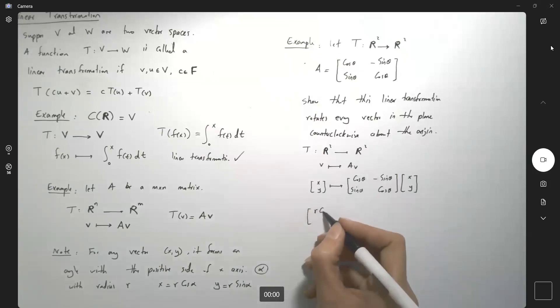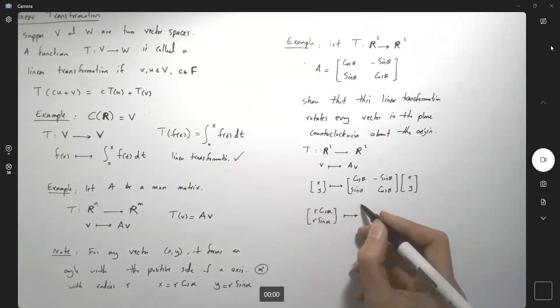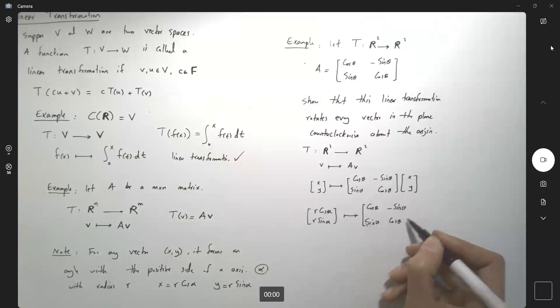So, any vector R cosine alpha, R sine alpha, is now mapped into the multiplication of cosine theta, negative sine theta, sine theta, cosine theta, and this guy here, which is R cosine alpha, R sine alpha. We're just doing the multiplication together.